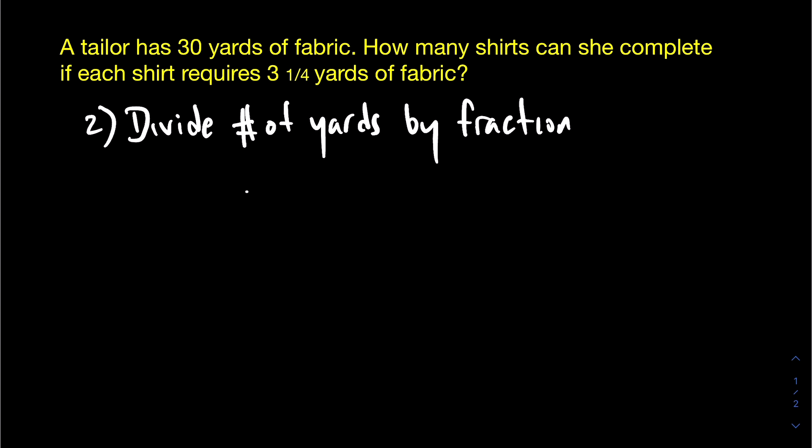And remember that when you divide by a whole number, like thirty, if you make it into a fraction, it would be thirty over one. And when you divide by a fraction, in this case, thirteen by four, you actually are multiplying by the reciprocal.